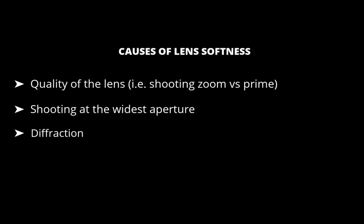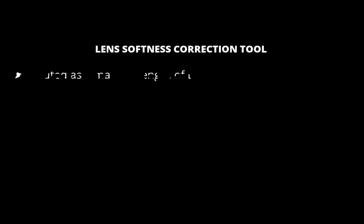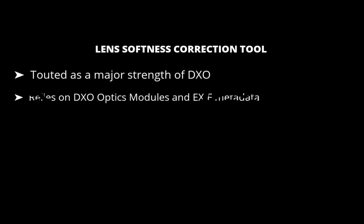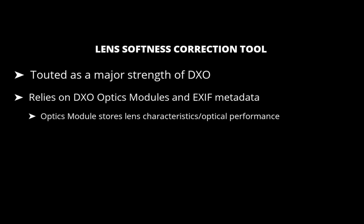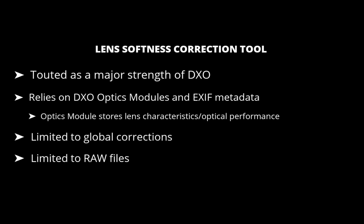Next, let's run through DxO's tools to improve sharpness. Let's start off with the lens softness correction tool. DxO says that the lens softness correction tool is one of its major strengths. It relies on DxO optics modules and EXIF metadata. DxO performs measurements on the softness characteristics for every point on the lens and stores this information in the DxO optics modules. Another characteristic of this tool is that it can only perform global corrections, and it only works with raw files.